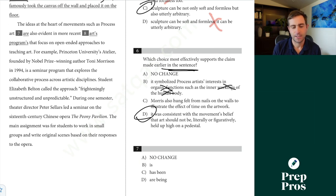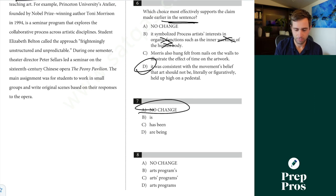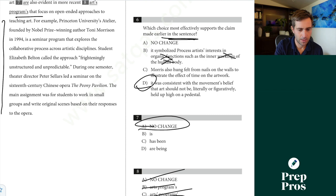Seven here, the ideas at the heart of the movements such as process art. Blank, this is a subject verb agreement question. The ideas are, being doesn't make any sense. So seven has to be A. Are also evident in more recent arts programs. Apostrophe question. Programs are very clearly not possessing that. So goodbye, goodbye, goodbye has to be D without even really thinking about it too much. So once again, I'll skim through this just a little bit quickly, so you guys aren't sitting here and watching me read too much.